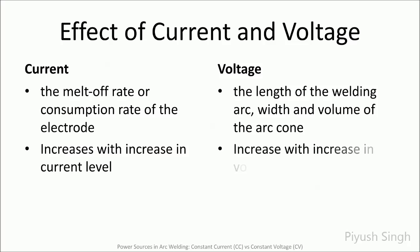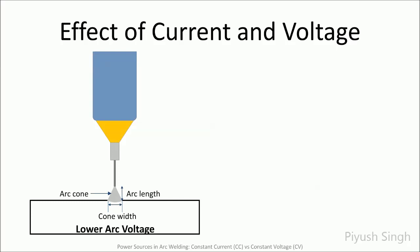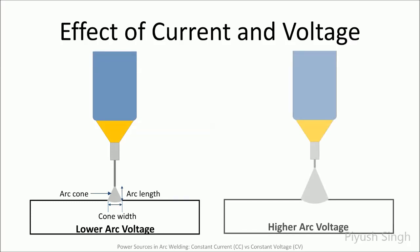Voltage controls the length of the welding arc and the resulting width and volume of the arc cone. These figures illustrate the effect of voltage on the arc. At lower arc voltage, the arc length gets shorter and the arc cone becomes narrower. As voltage increases, the arc length gets longer and the arc cone becomes broader.